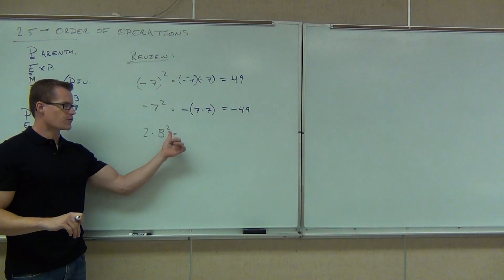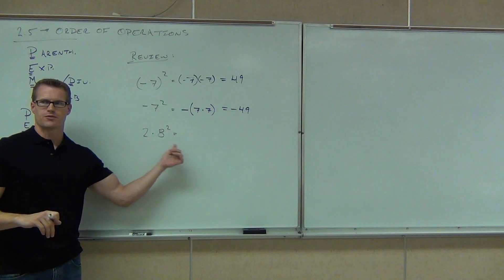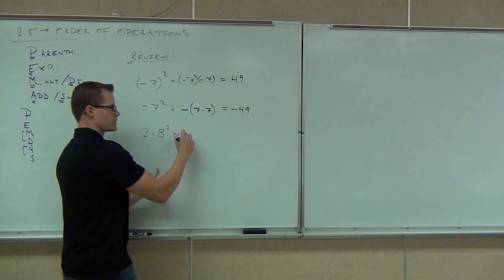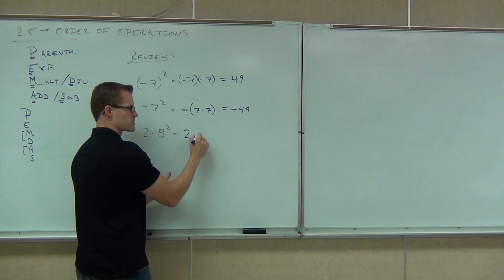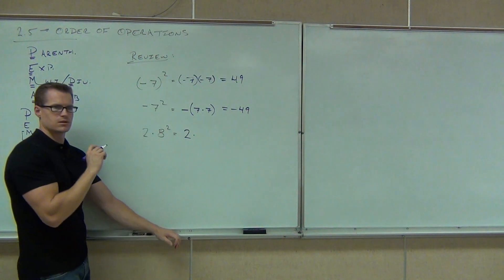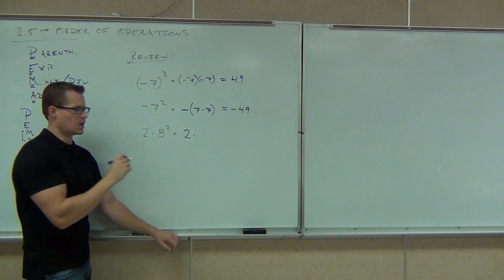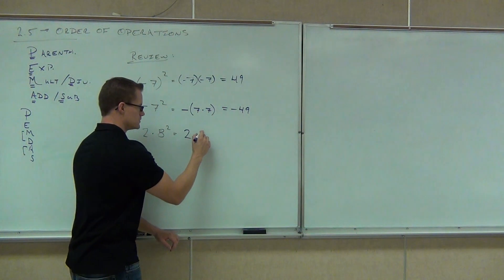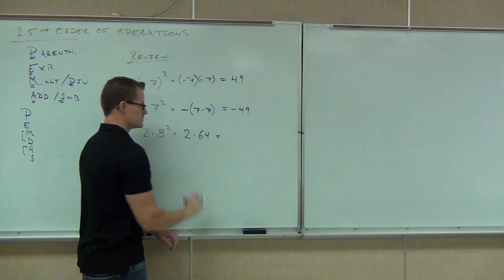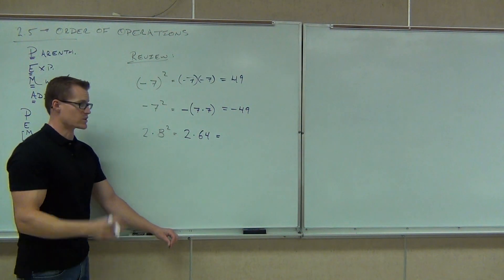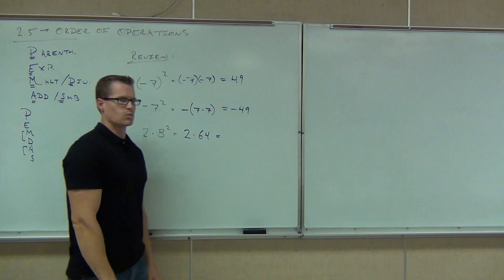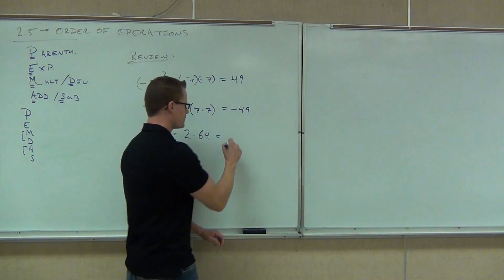Next review problem: should we square first or multiply first? Square first — definitely. So for 2 times 8 squared, that means 2 times 8 times 8, not 16 times 8. Remember, it's 8 times 8 first, and that's going to give us the 128 we want.